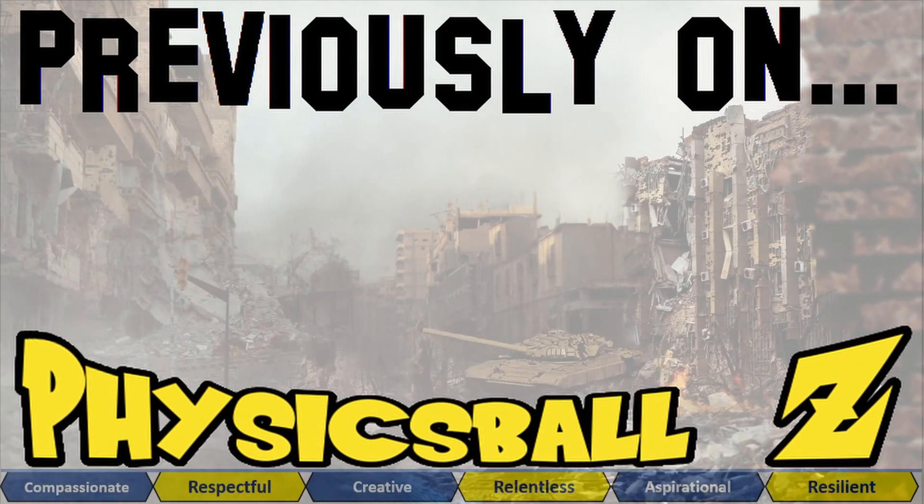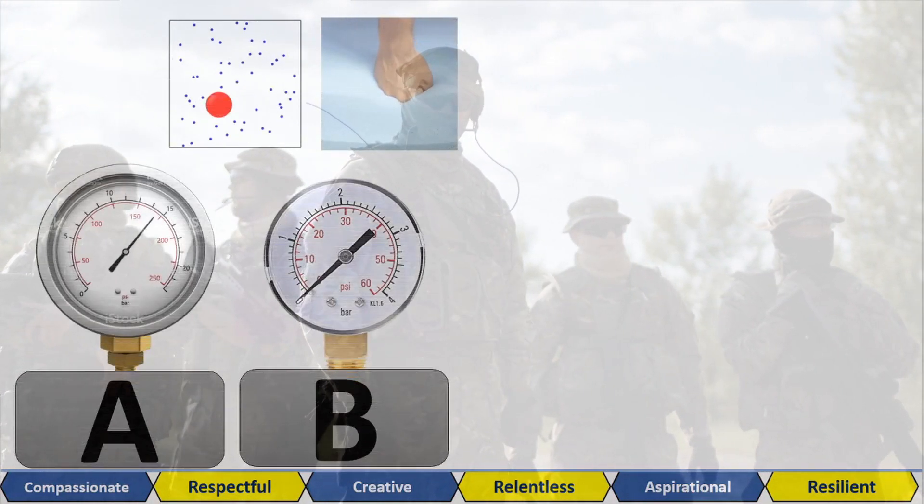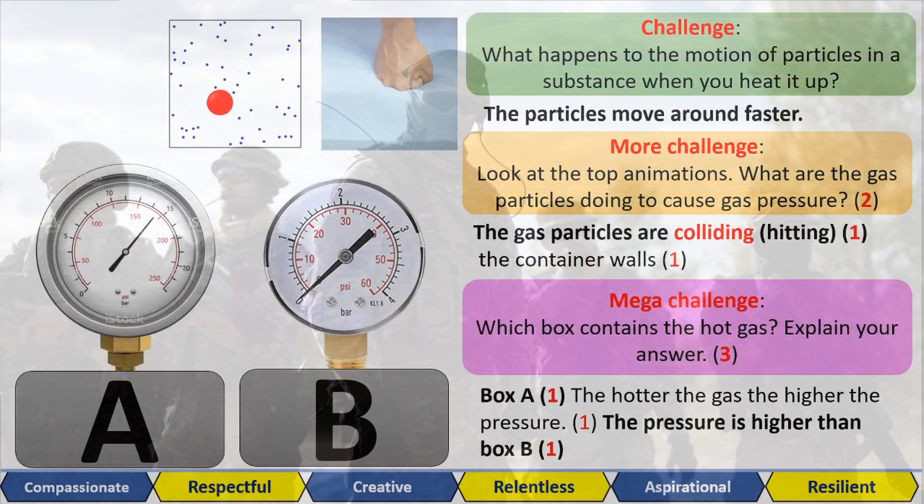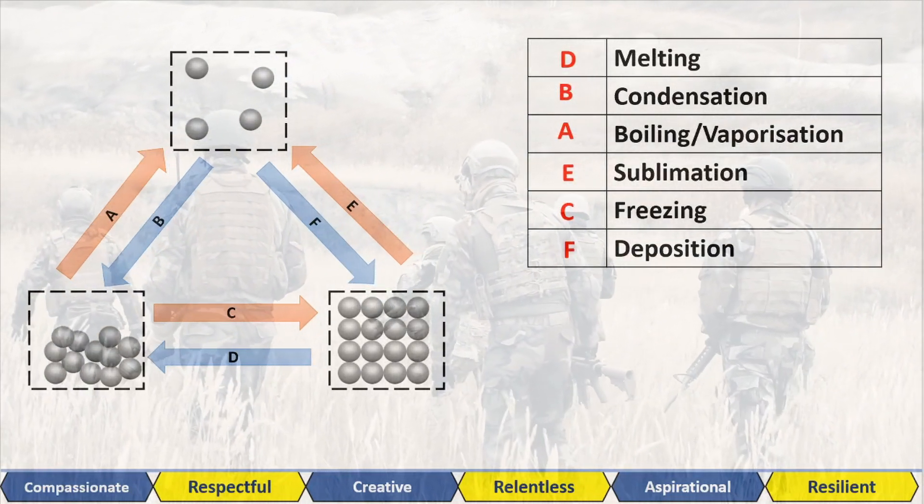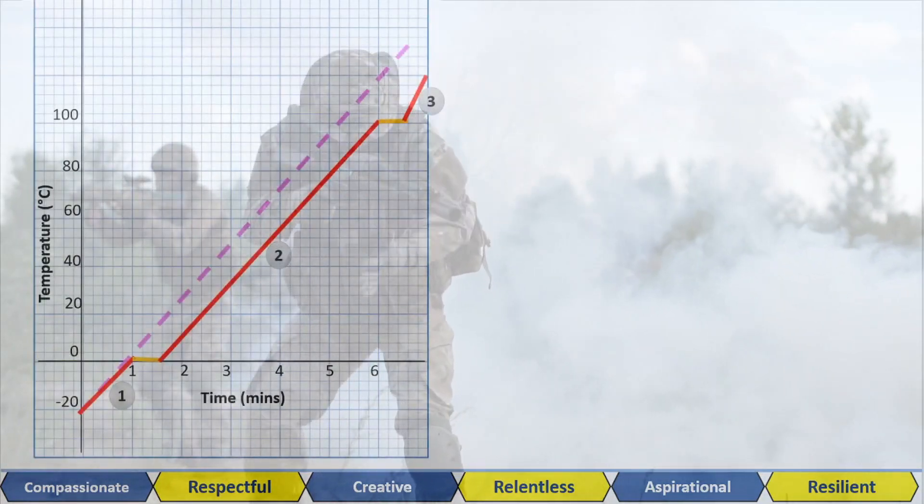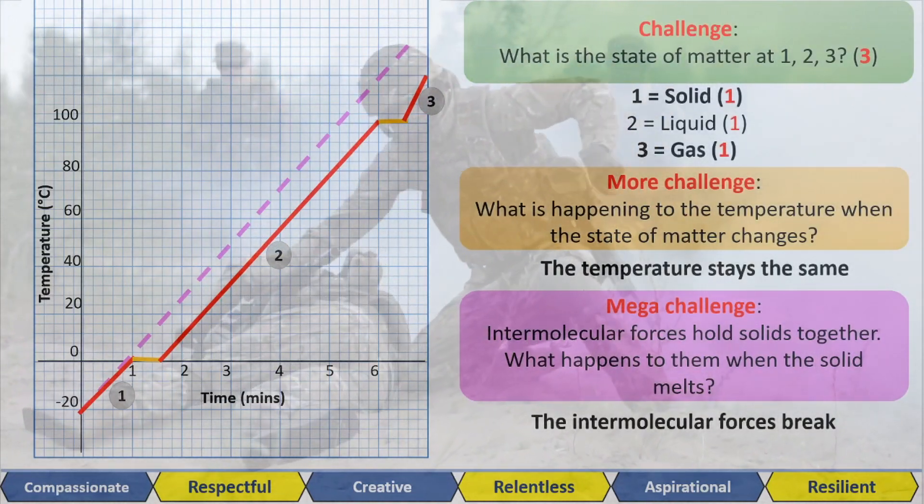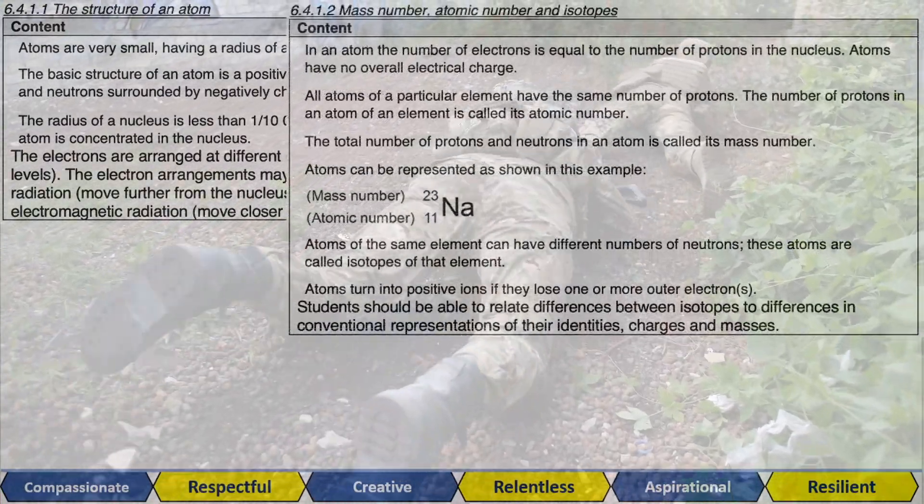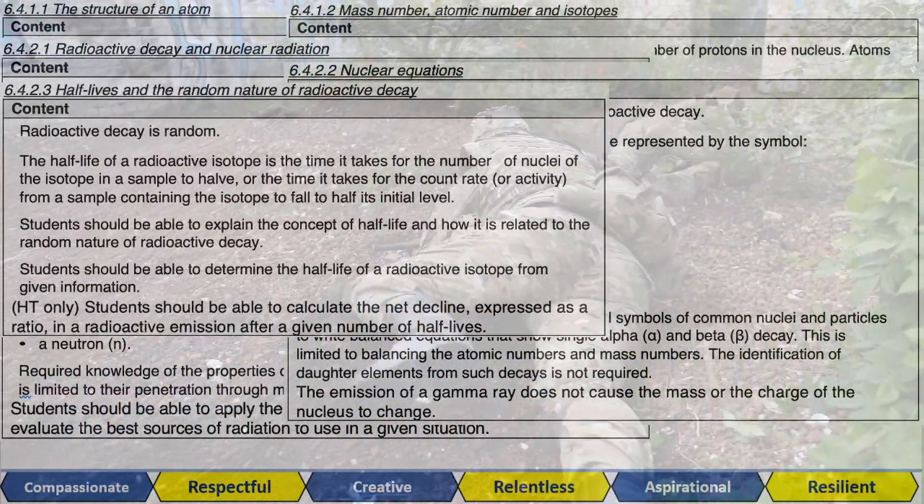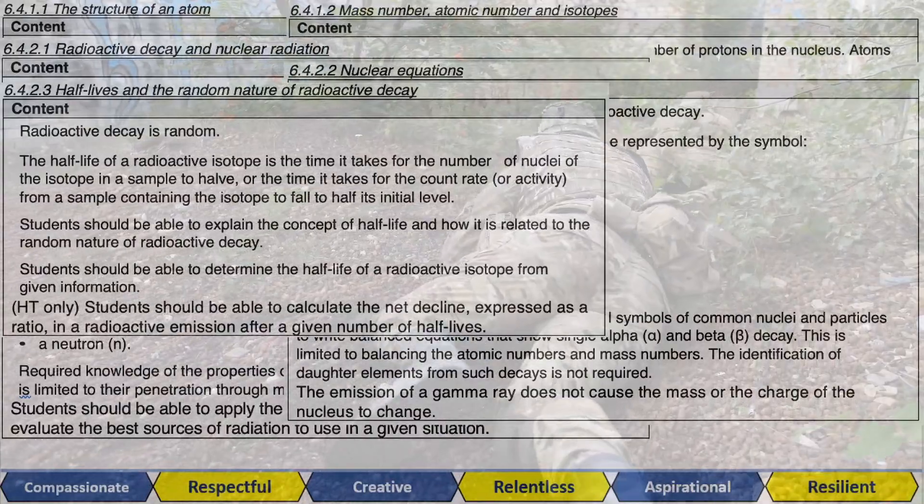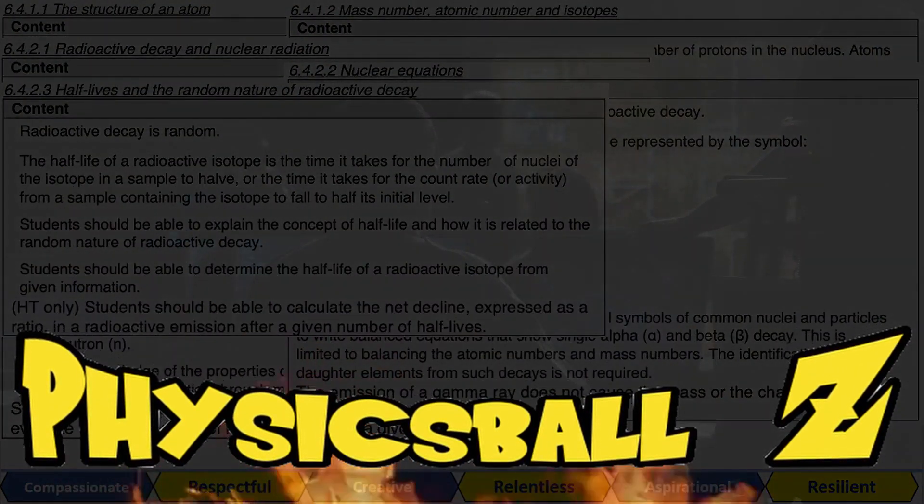Previously on Physics Ball Z, our heroes discovered the different structures of solids, liquids and gases, the link between temperature and gas pressure, and were able to label sublimation using the arrows of state changes. After being attacked by the heat curve of water, they leveled up and described the latent heat of fusion and vaporization. Now, our heroes have located the nuclear fuel held by the enemy of progress. Find out in the season finale of Physics Ball Z.